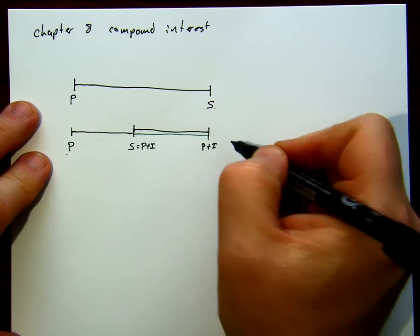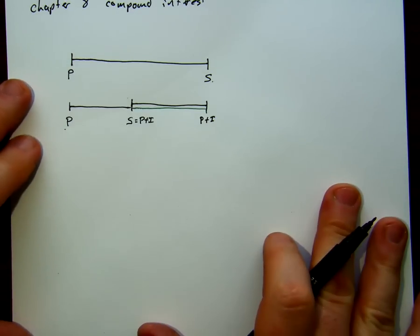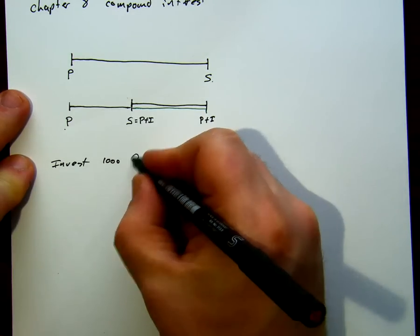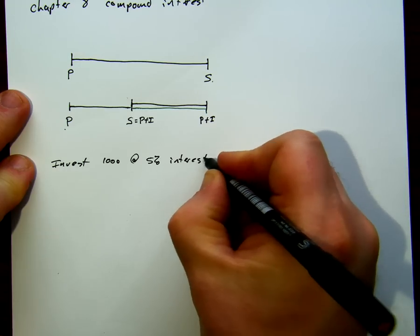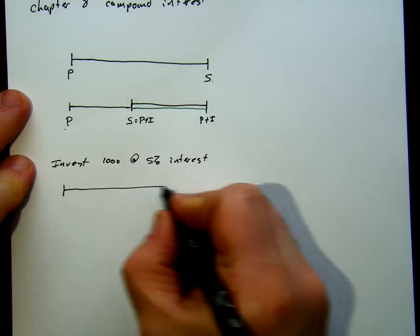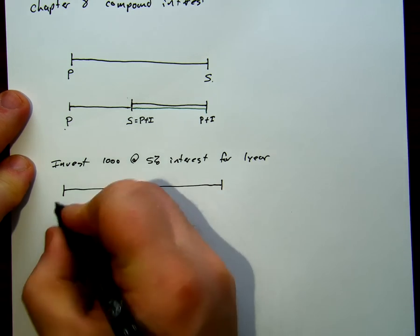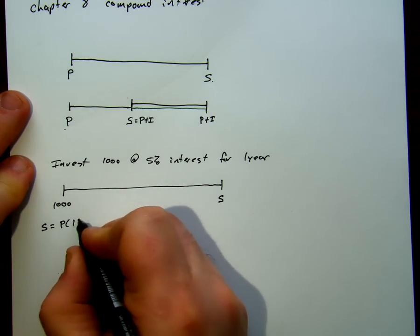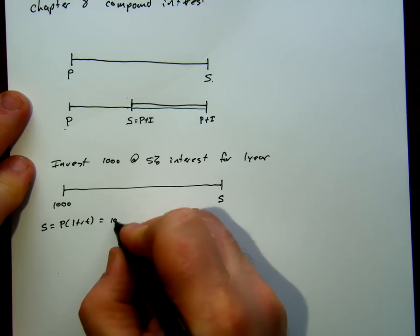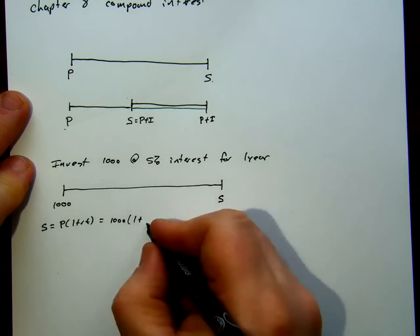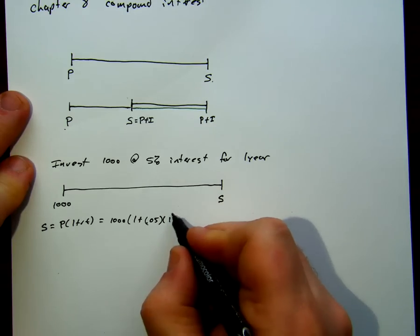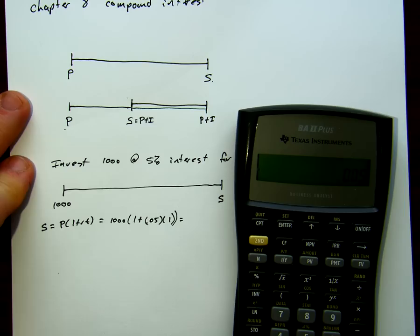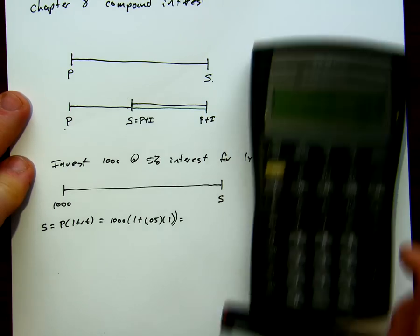Instead of doing one simple interest problem, we're doing two simple interest problems. Let's take a look at the example of investing $1,000 at 5% interest. Simply doing this for one year, we have $1,000, and after a year we end up with a value of S. We know that S is equal to P(1 + RT), so that's $1,000 times 1 plus 0.05 times 1 year, which gives us $1,050.